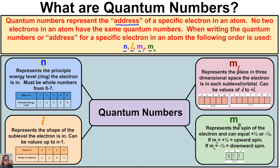The quantum number n represents the principal energy level, or ring, that the electron is in. If we have the nucleus of an atom here, the very first ring is n equals one. The second ring would be n equals two, and so on. The n value must be whole numbers from one to seven, representing the principal energy level that the electron has the highest probability of being in.